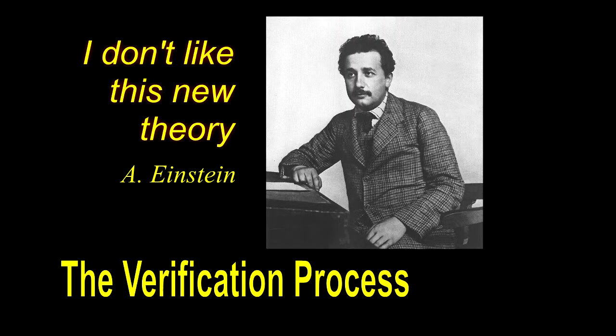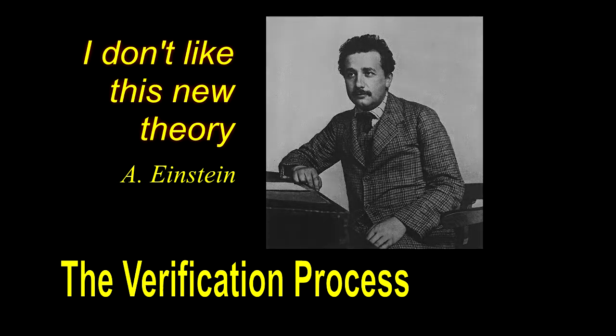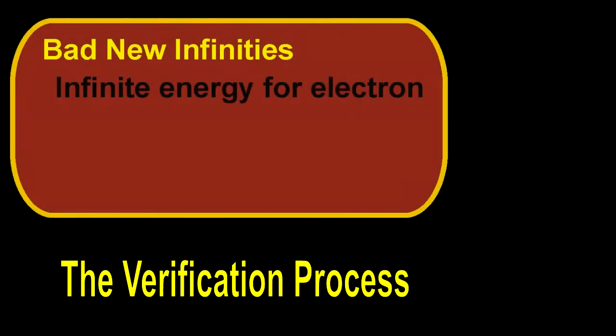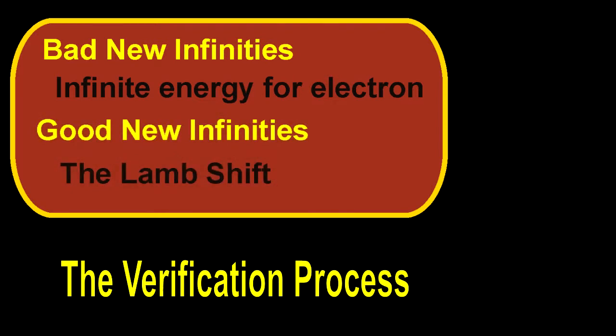The verification process took a long time because physicists were schooled in Newton's ideas and not in quantum field theory. Also, the process was hampered when new infinite predictions kept cropping up. It wasn't until 1949 that these infinities began to be understood. That led to new predictions that were verified with more experiments.